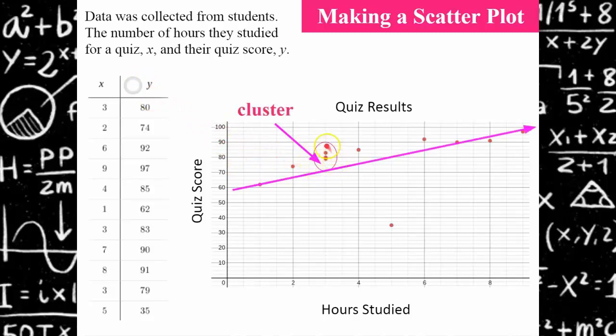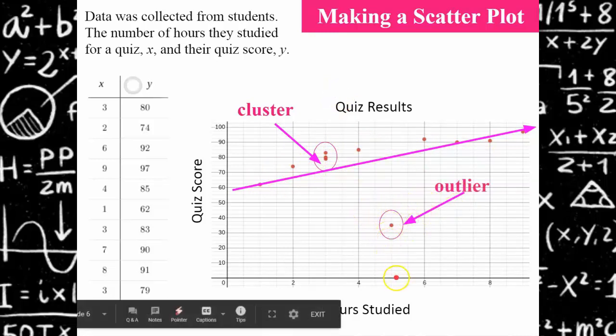You can see that I have a cluster here. There's three data points here, whereas all the others are pretty spread out. You can see I have an outlier here. Somebody studied five hours and scored a 35, but everybody else was pretty much right along here.